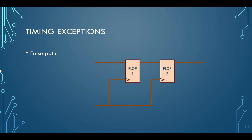First of all, by timing exception we mean when certain paths are not intended to operate according to the default setup or hold behavior assumed by PrimeTime or any other tool. You should specify those paths as timing exceptions. Otherwise, your tool might incorrectly report these paths as a violation, but actually it is not a violation as per the design functionality. So you don't need to optimize such paths.